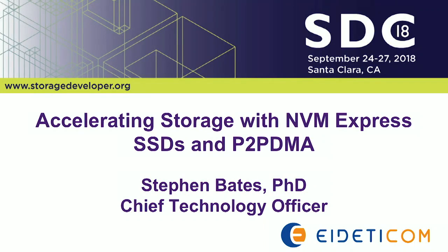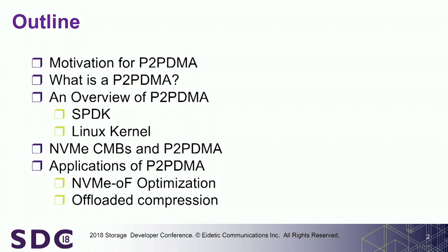This is going to be a bit of a walkthrough. This is a topic that is near and dear to my heart — I've worked on it in various shapes and forms for quite some time. We're going to talk about how we can improve the way data moves around in high-performance PCIe/NVMe-based systems using a framework we are proposing for both SPDK and the Linux kernel called P2P DMA — Peer-to-Peer DMA.